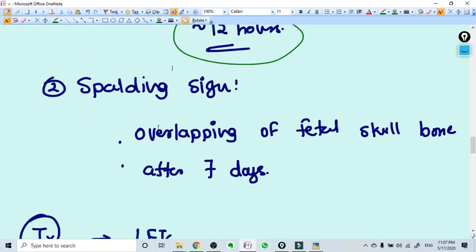Now the very important sign is Spalding sign. That means the overlapping of fetal skull bones. The thing you need to know is it comes only after seven days of IUD.